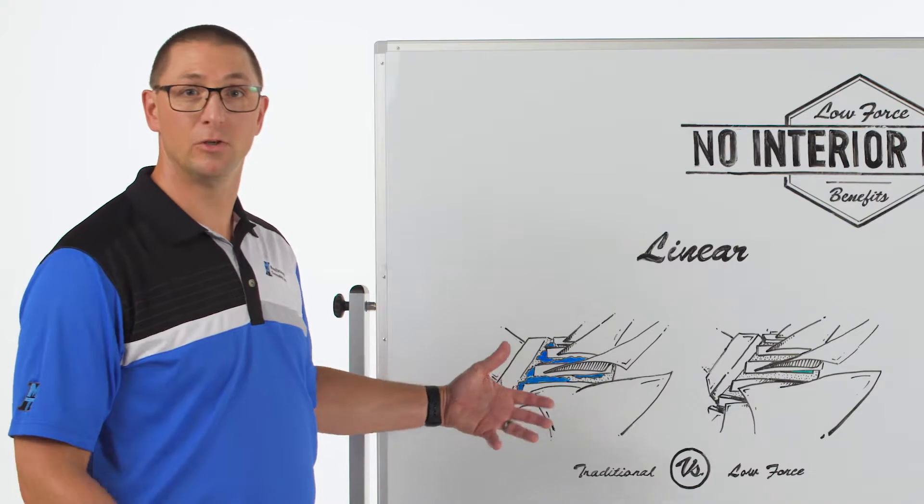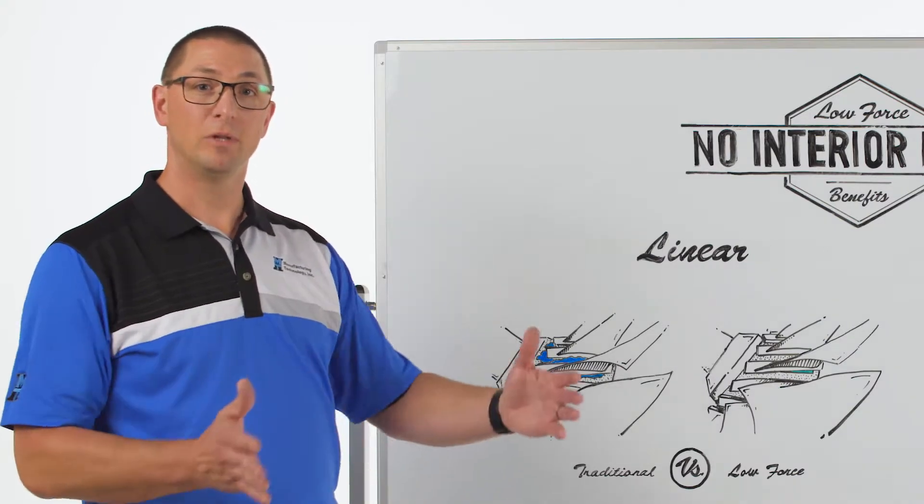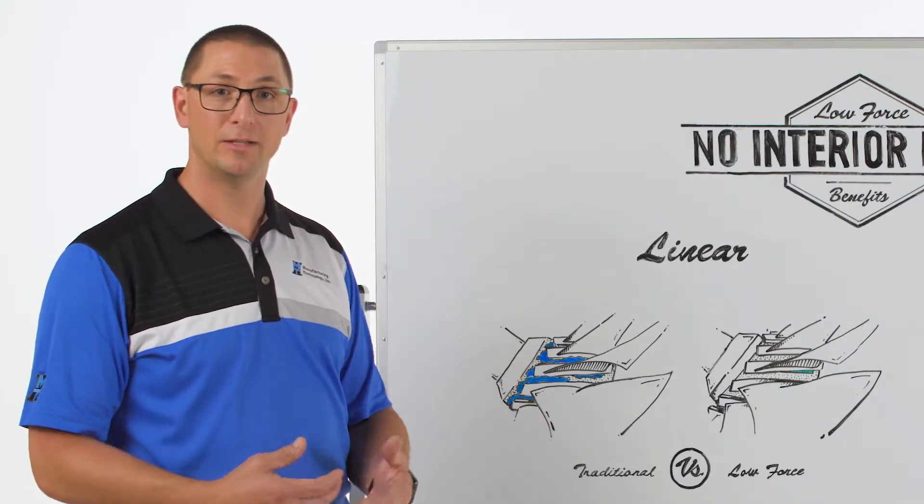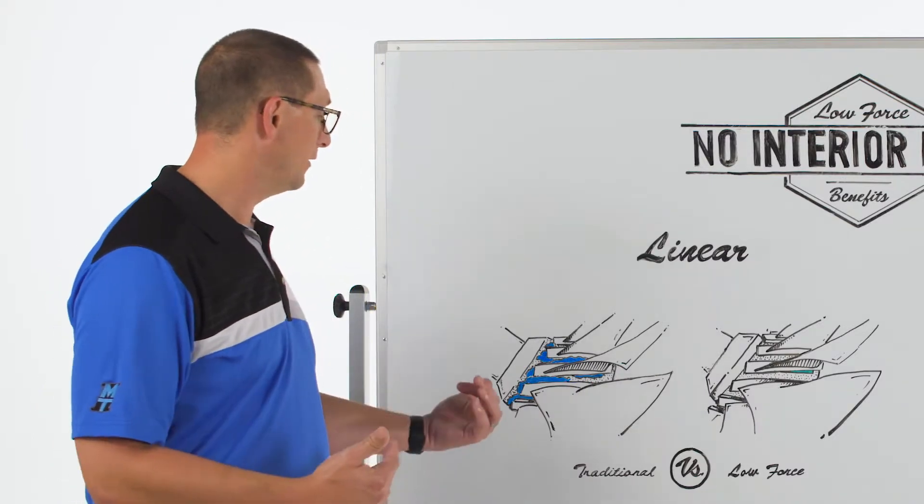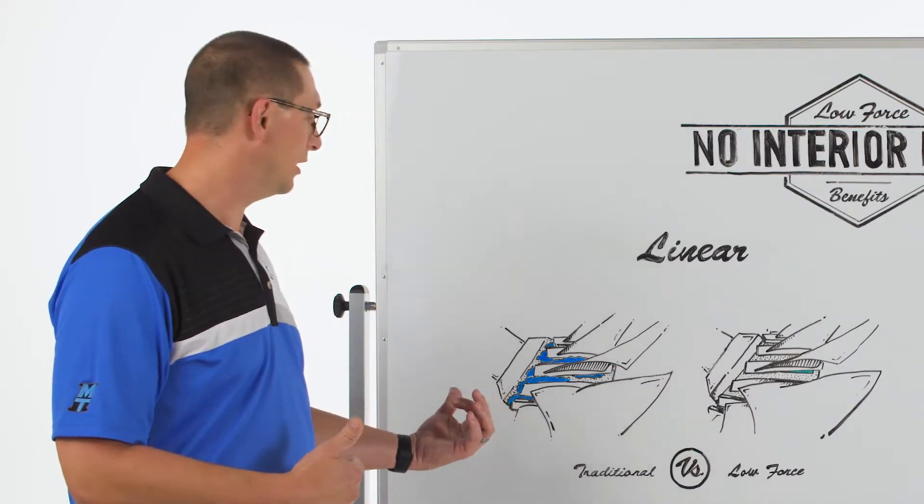This flash uses up some of the tooling space that we have. The blade spacing has to be accommodated so that we don't hit the tooling on the flash of the weld that was just generated before.